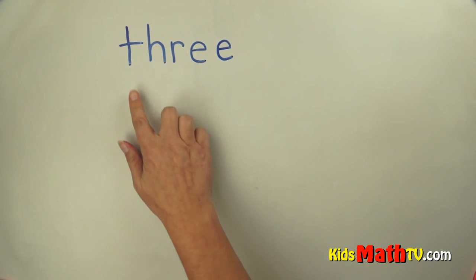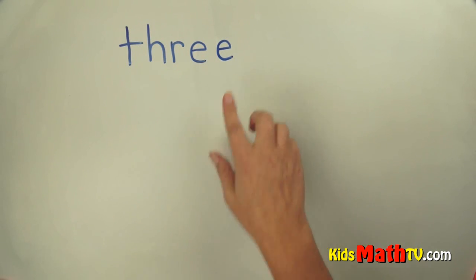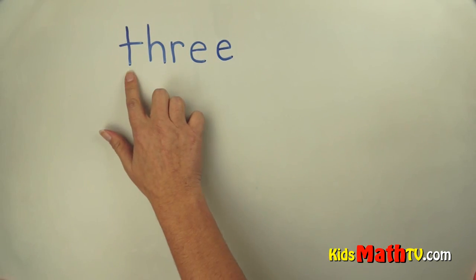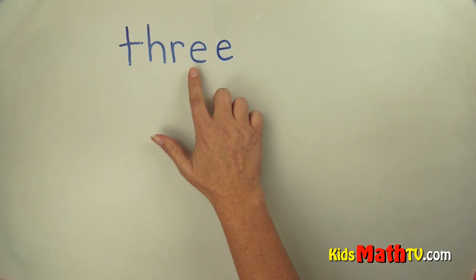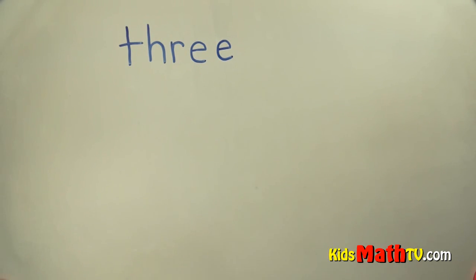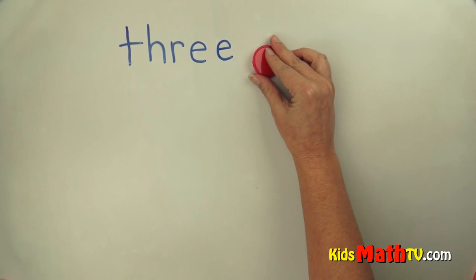In this lesson you will learn about the number three. Three is spelled T-H-R-E-E and here are three red chips.